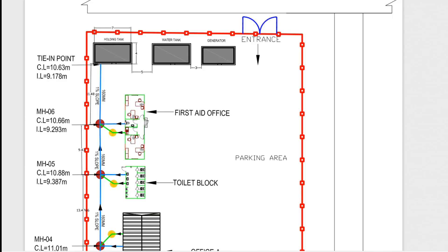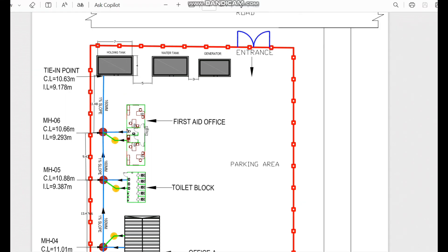In this design I didn't cover the internal building design. In this video I am starting from the external drainage pipes, including manholes and gully traps, through to the final holding tank and Excel. Along with the three offices, we have a toilet block, a first aid office, and here I have given the location to place the holding tank, water tank, and generators.